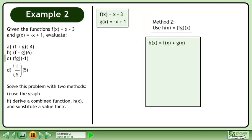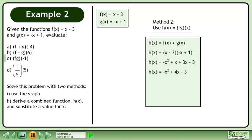Now solve the problem algebraically by finding a function h that is the product of functions f and g. Replace f of x with x minus 3 and replace g of x with negative x plus 1. Multiply the binomials and collect like terms to get h equals negative x squared plus 4x minus 3. Now evaluate h at negative 1 to get negative 8. This matches the result we obtained from the graph earlier.